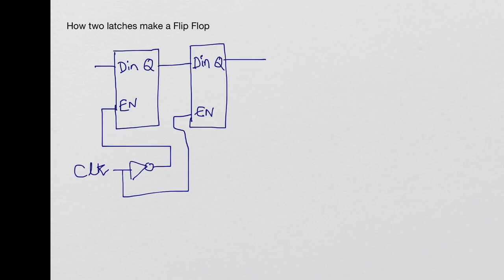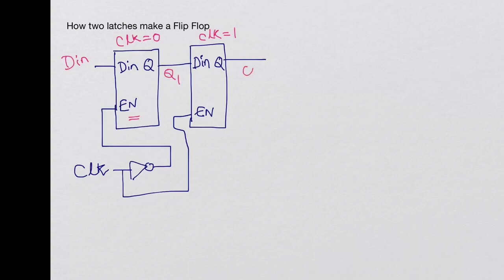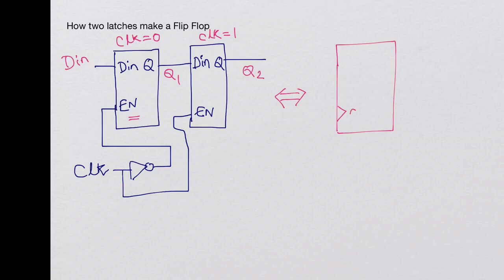So the first latch is enabled when clock is low, and the second one is enabled when clock is high. This is the actual DN input; we will call the first latch output Q1 and the second latch output Q2. We want to see if this makes a rising edge triggered flip-flop — meaning this circuit should be equivalent to a flip-flop with a clock input, DN, and Q out.